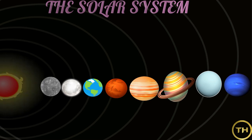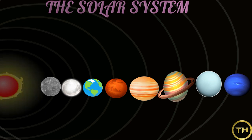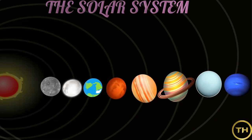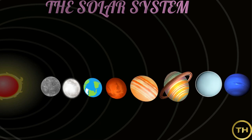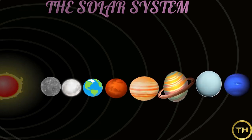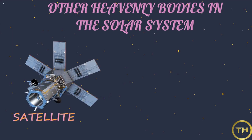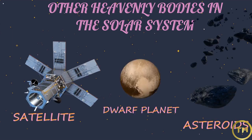The sun, which is a star, and the planets that revolve around it are together called the solar system. The planets that revolve around the sun are Mercury, Venus, Earth, Mars, Jupiter, Saturn, Uranus, and Neptune. The other heavenly bodies in the solar system are satellites, dwarf planets, and asteroids. Now we will learn each in detail.